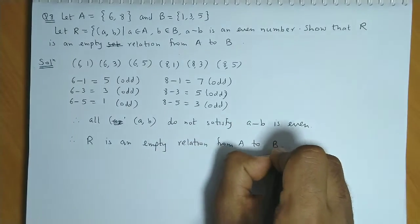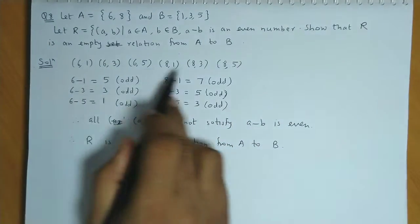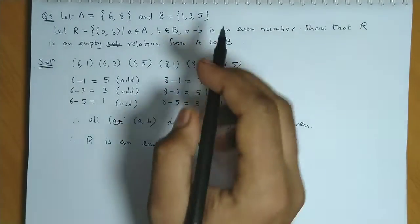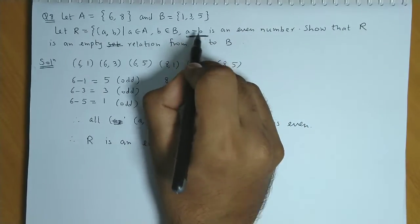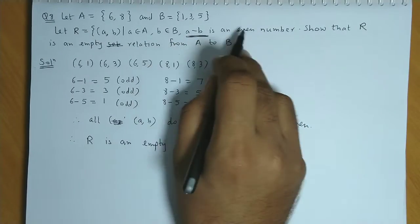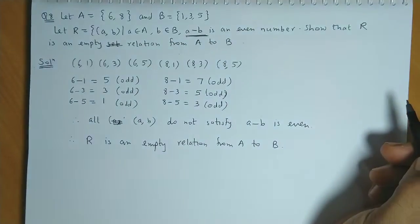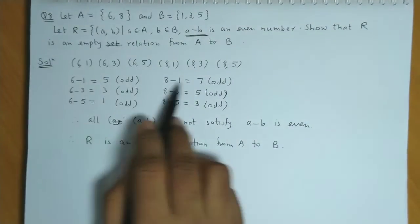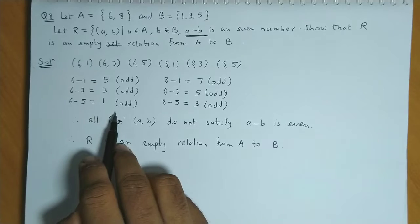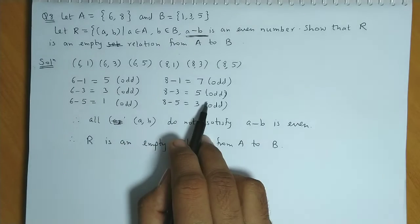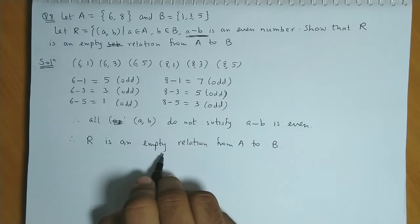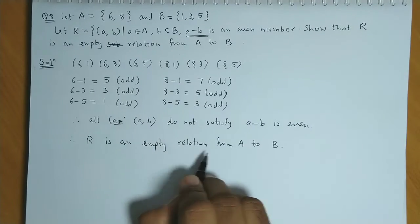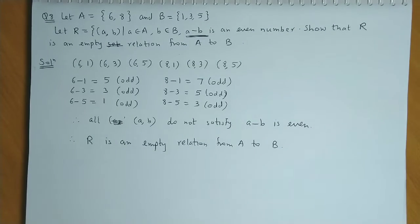So first we listed the ordered pairs and then verified which ordered pairs give an even a minus b. We checked all the a minus b values and none of them are even. Therefore R is an empty relation from A to B.